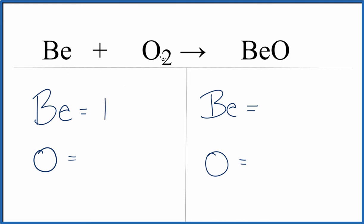We have one beryllium and two oxygens. Over here, we have one beryllium and just one oxygen.